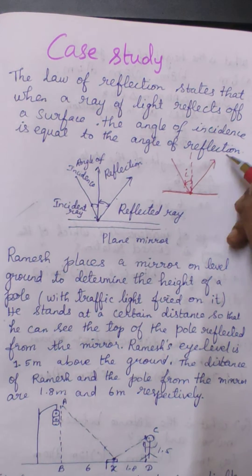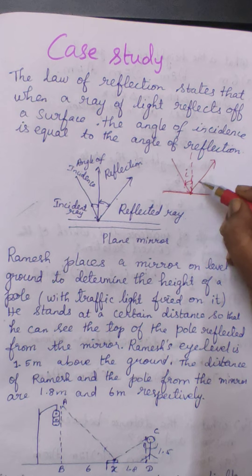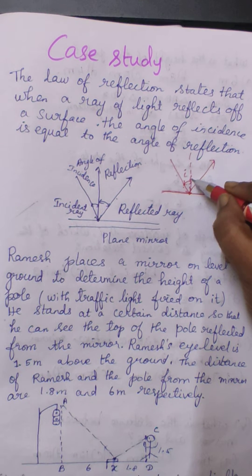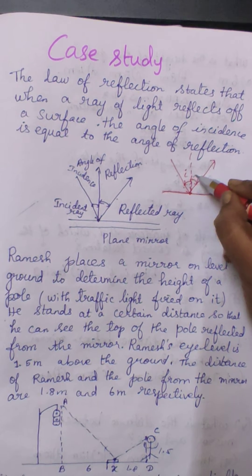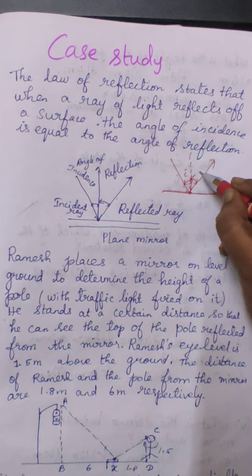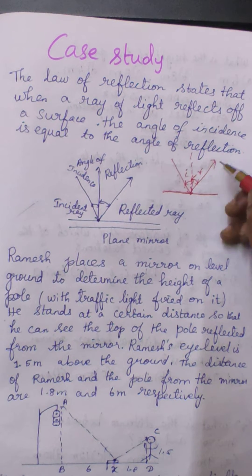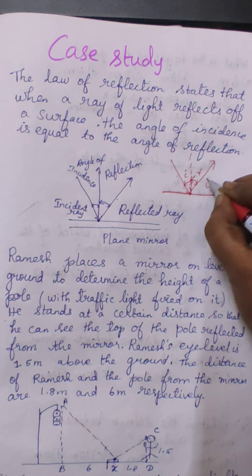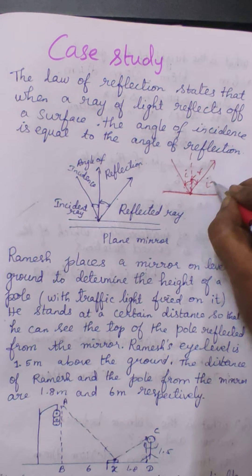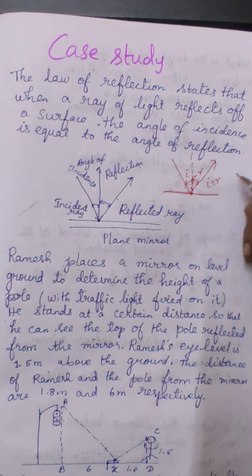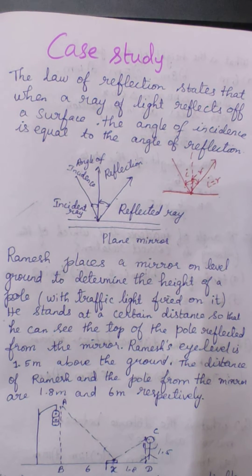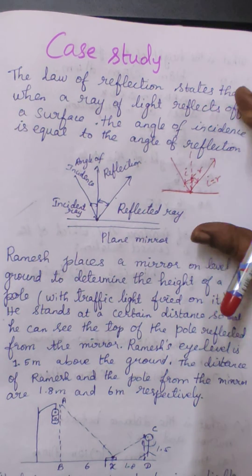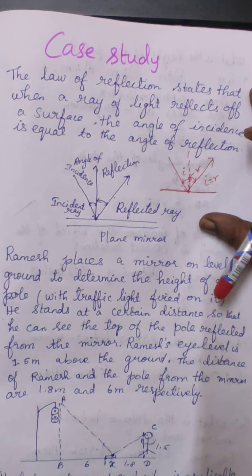After hitting the surface, it is getting reflected. This is called the reflected ray. You will calculate the angle of reflection with respect to the perpendicular. The reflected ray will make a particular angle with the perpendicular, and this angle is known as the angle of reflection. According to the law of reflection, angle of incidence equals angle of reflection. This is given in the note.